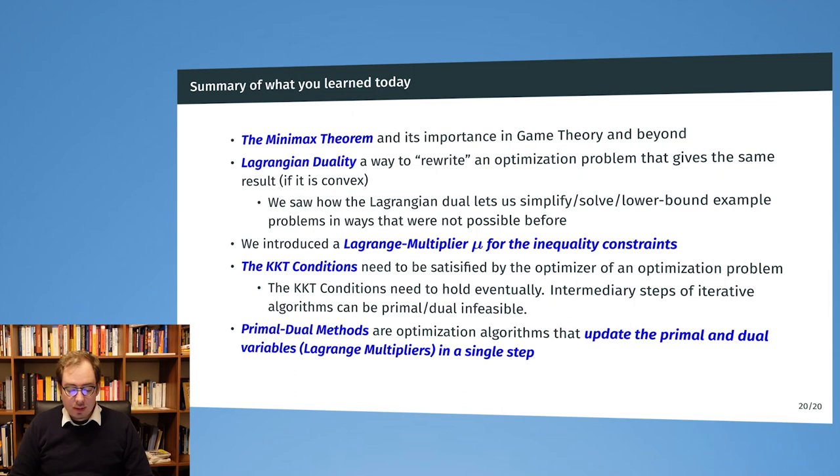Then afterwards we looked at ways we can introduce an additional Lagrange multiplier mu specifically for the inequality constraint and how this is used in the KKT conditions to describe the conditions for which I know that optimality has been achieved.